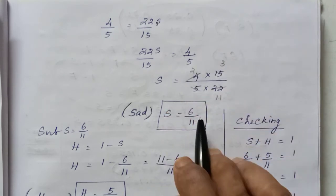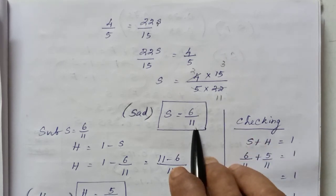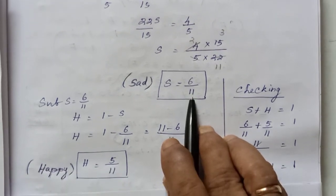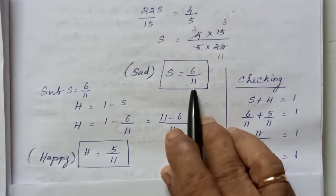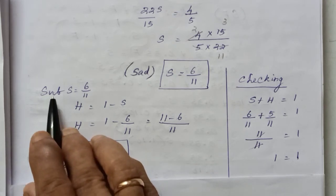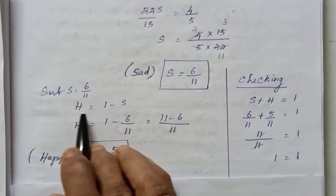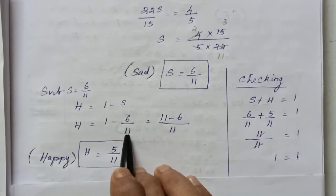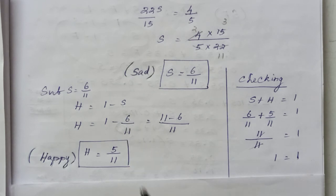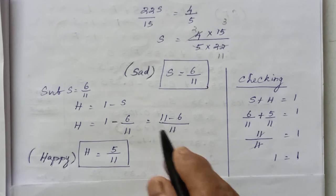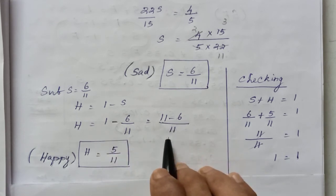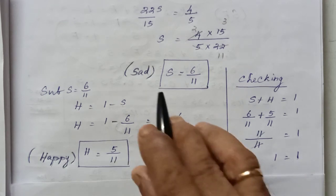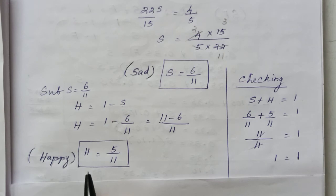So sad S is 6 by 11. Then we know: happy H equals 1 minus S. Substitute: happy equals 1 minus 6 by 11, which gives happy equal to 5 by 11. So sad is 6 by 11 and happy is 5 by 11.